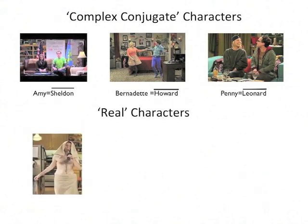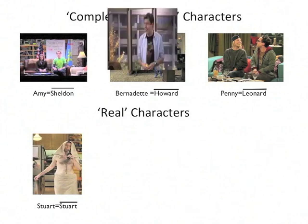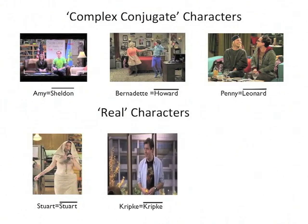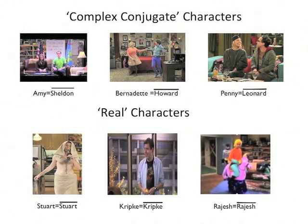Let's consider the real characters now. This is Stuart. He doesn't have a girlfriend, so he's conjugate to himself. Same is the case with Kripke and Rajesh.